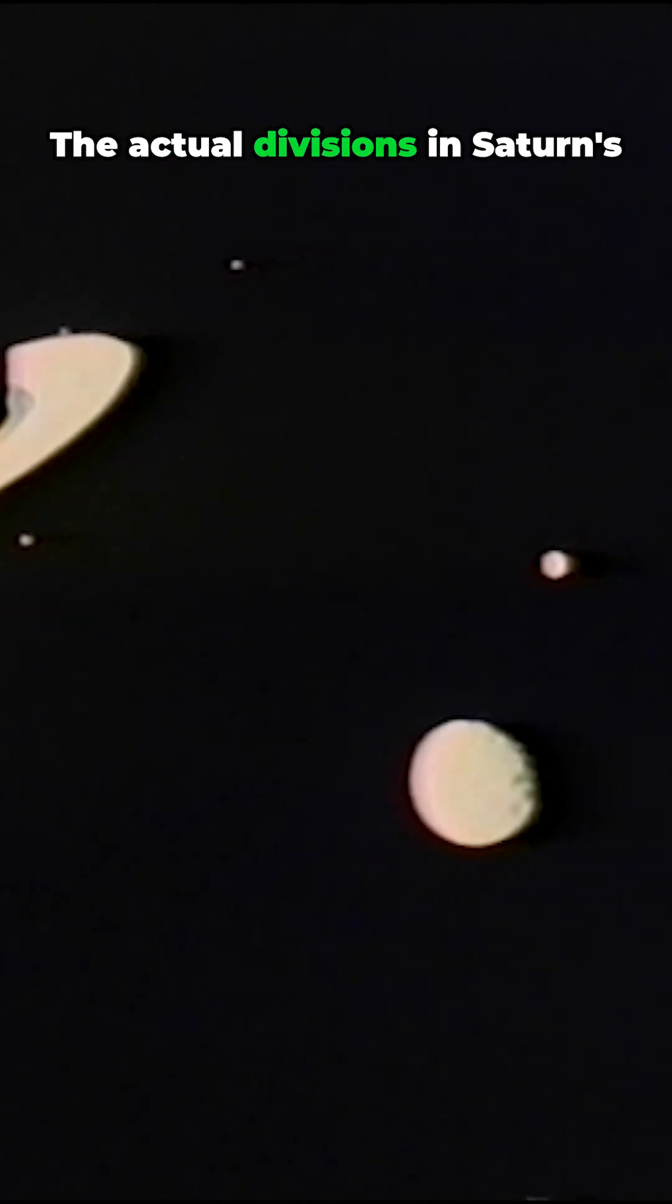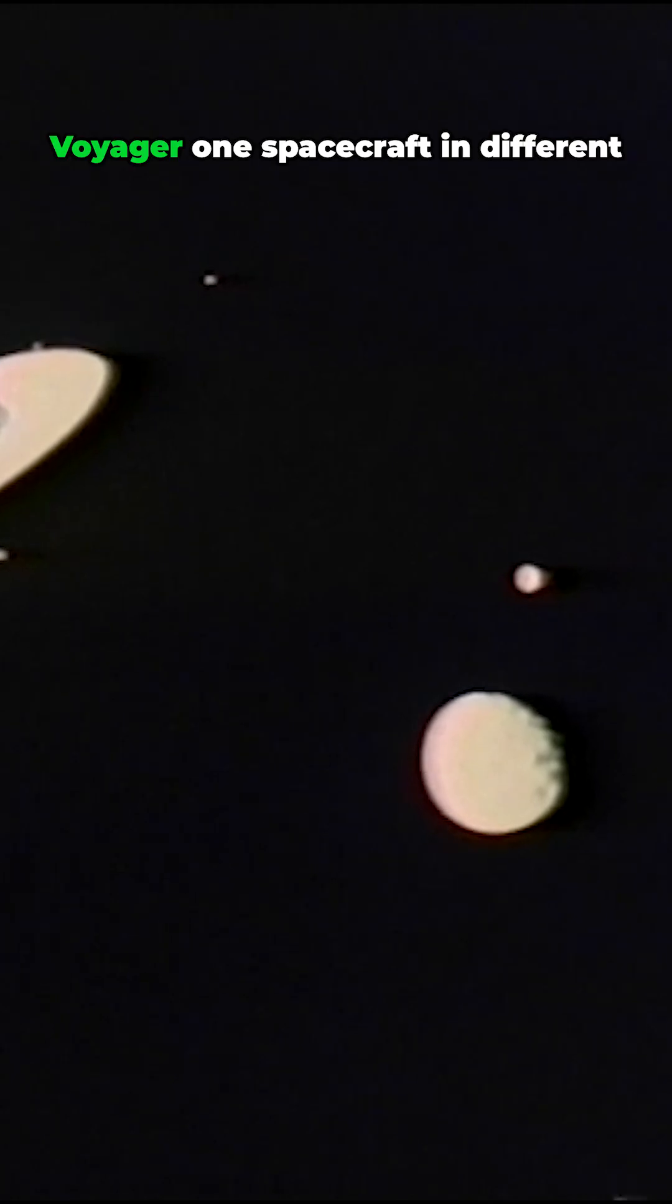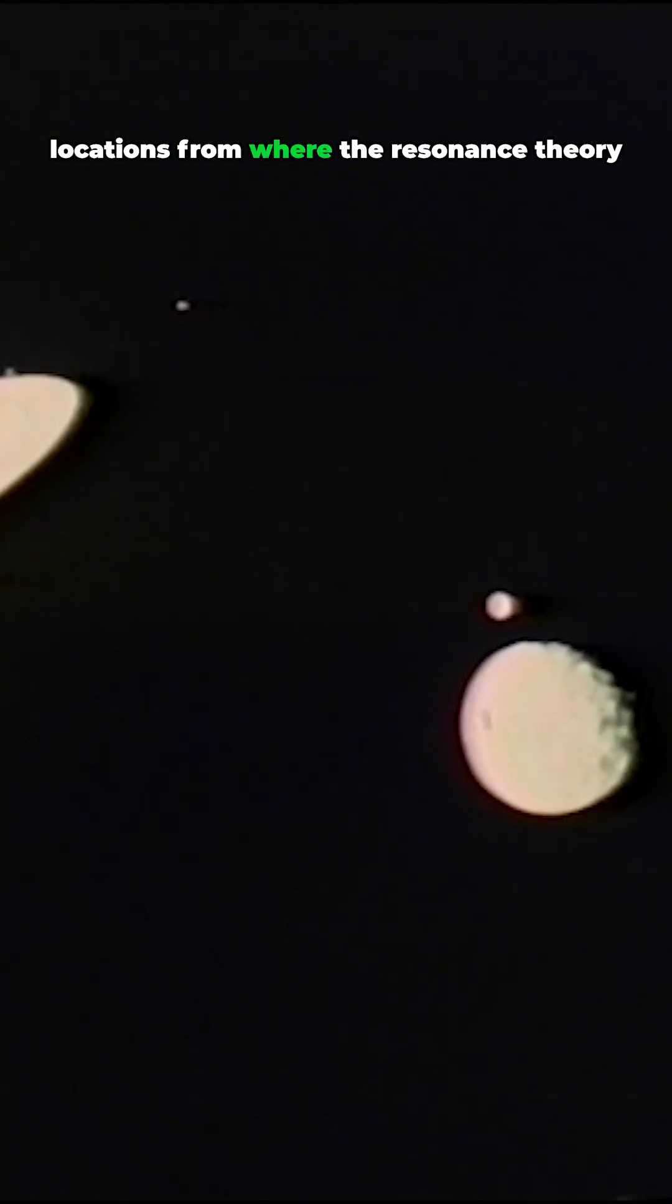The actual divisions in Saturn's rings were found by the Voyager 1 spacecraft in different locations from where the resonance theory had so confidently placed them.